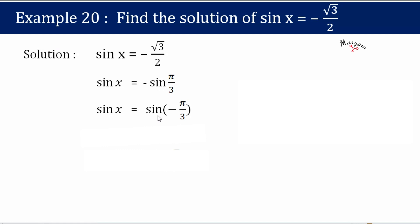So now sin x equals sin minus pi by 3 is in the form of sin theta equals sin y. For sin theta equals sin y, we have the relation theta equals n pi plus minus 1 whole raised to n into y.